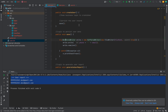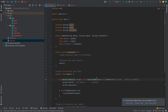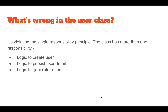Everything seems fine, but this code is violating the Single Responsibility Principle. The User class has more than one responsibility: it has logic to create users, logic to persist user details, and logic to generate the report. Logic to create a user is the intended behavior of this class and should be fine.